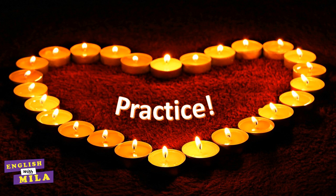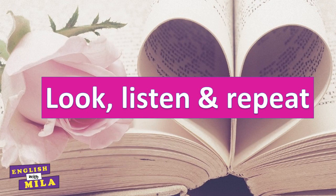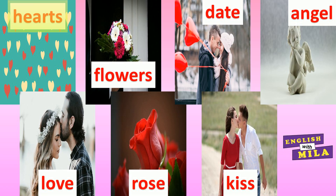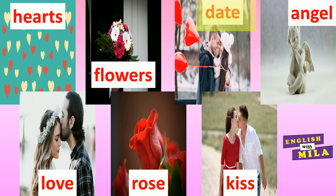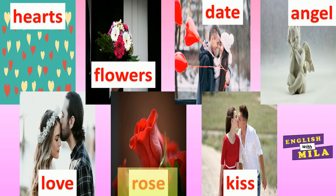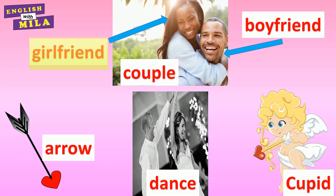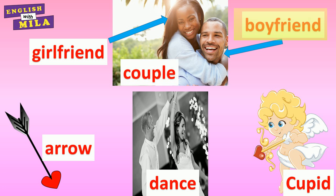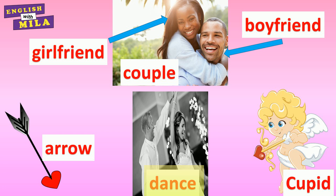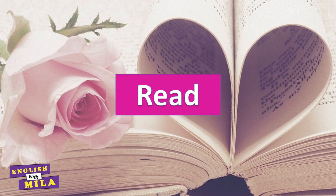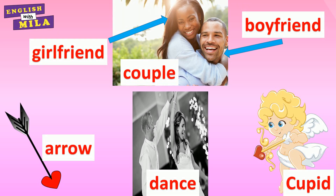Practice. Look, listen and repeat: hearts, flowers, date, angel, love, rose, kiss, girlfriend, couple, boyfriend, arrow, dance, cupid. Read at least three times.